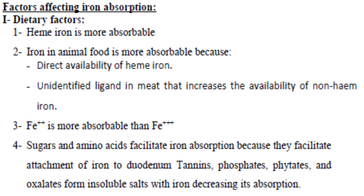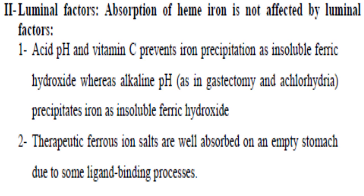In summary, heme iron is easier to absorb than non-heme iron. Animal iron is easier to absorb than plant iron, as animal iron is present in the heme form. Ferric iron is easier to absorb than ferrous iron as it needs no conversion. The presence of sugars and amino acids in the intestinal lumen helps iron absorption, while phytate and tannate cause precipitation of iron and inhibit absorption. Luminal factors affect only non-heme iron and do not affect heme iron absorption.